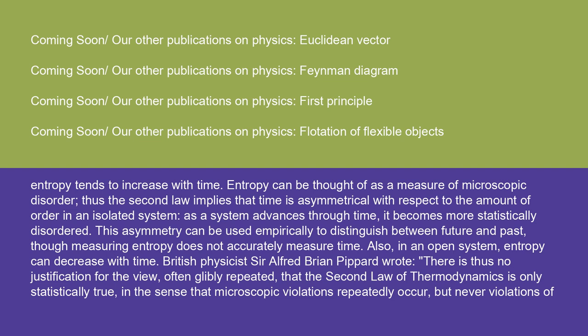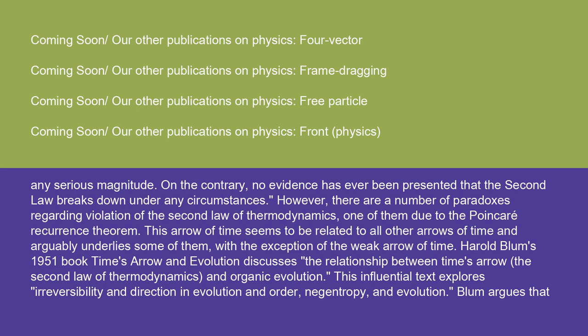As a system advances through time, it becomes more statistically disordered. This asymmetry can be used empirically to distinguish between future and past, though measuring entropy does not accurately measure time. Also, in an open system, entropy can decrease with time. British physicist Sir Alfred Brian Pippard wrote: 'There is thus no justification for the view, often glibly repeated, that the second law of thermodynamics is only statistically true, in the sense that microscopic violations repeatedly occur, but never violations of any serious magnitude. On the contrary, no evidence has ever been presented that the second law breaks down under any circumstances.'